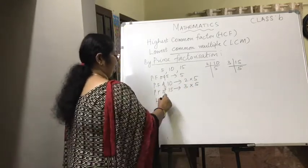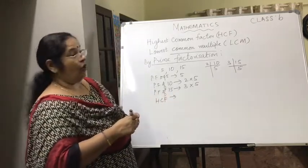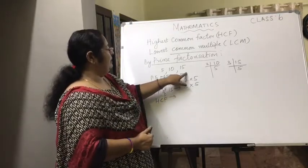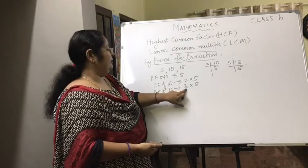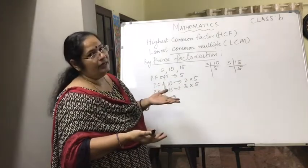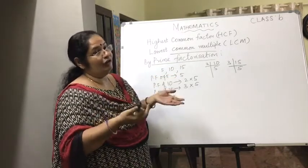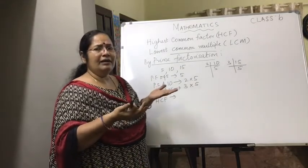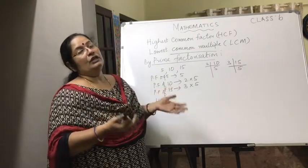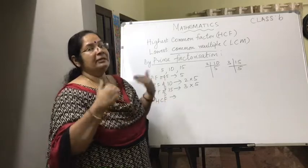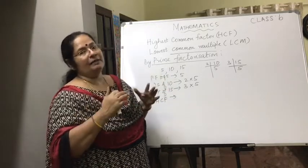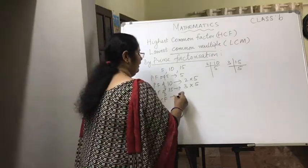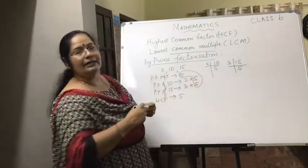Now let's find the HCF. We take the common factors across all three numbers. The number 2 appears only in 10, and 3 appears only in 15, so neither is common to all. But 5 is common to all three. Since there is no other common factor, we multiply all common factors — here just 5 — so the HCF is 5.